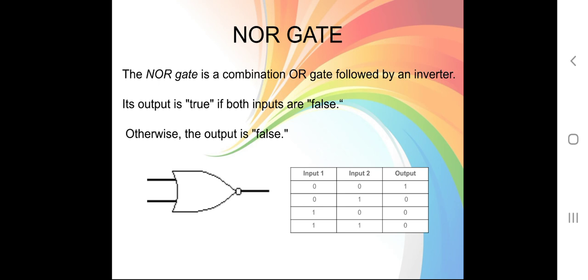For the NOR gate — the NOR gate is a combination of an OR gate followed by an inverter. Its output is true if both inputs are false; otherwise the output is false. To draw the NOR gate, you draw an OR gate followed by a NOT gate — so OR gate followed by NOT gate gives you the NOR gate.